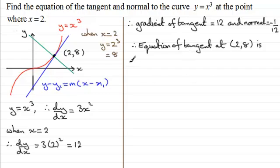So therefore, we have that the equation is going to be y minus y1, which is 8, equals the gradient of the tangent, which is 12, multiplied by x minus x1, which is 2.